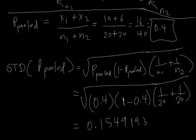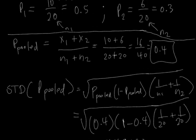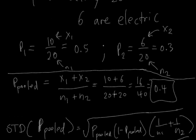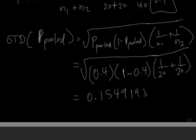Now that we have these three components - the standard deviation of the P pooled, the pooled proportion, and each of the individual proportions - we're going to calculate our test statistic. Our test statistic is given by Z, which is equal to P1 subtract P2 divided by the standard deviation of the P pooled.